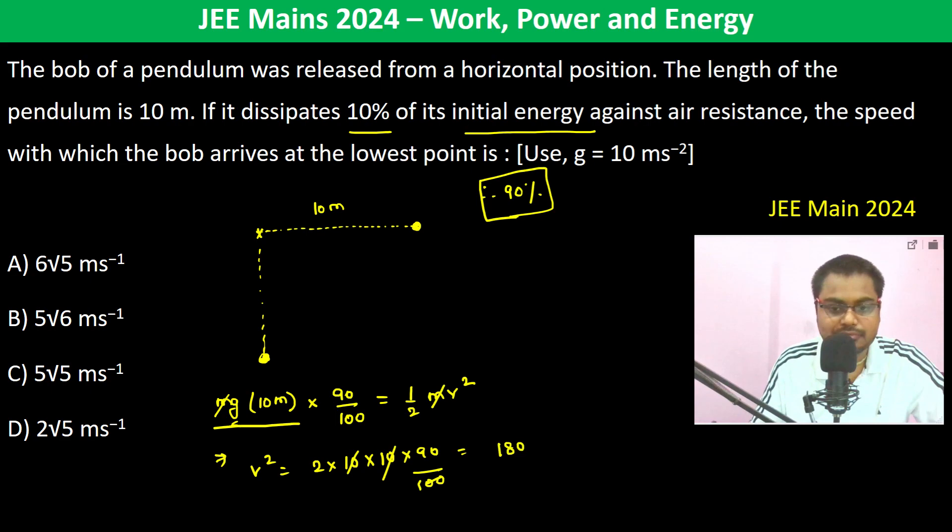This gives 180, so v squared is 180. Therefore v becomes 6 root 5 meter per second, because v squared equals 36 times 5. So v equals root of 36 times 5, which is 6 root 5 meter per second.